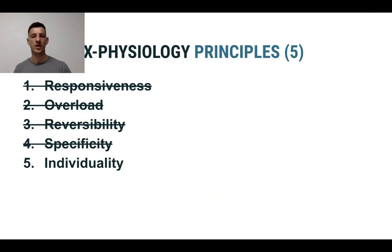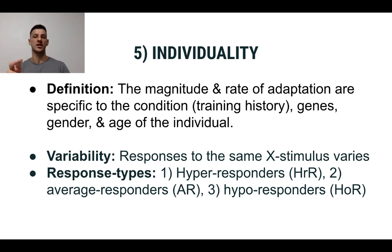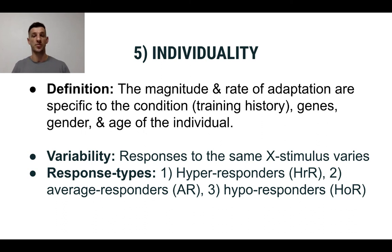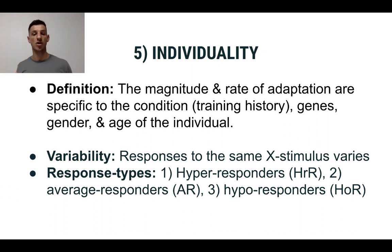Last but not least, we have what we call the individuality principle. The individuality principle is very similar to the specificity principle in the sense that the magnitude of adaptation and the rate at which you adapt is highly specific to your training history, your age, gender, genetic profile, and other variables. The only way to really know what type of response you'll have to a program is obviously to be on the program long enough to see.